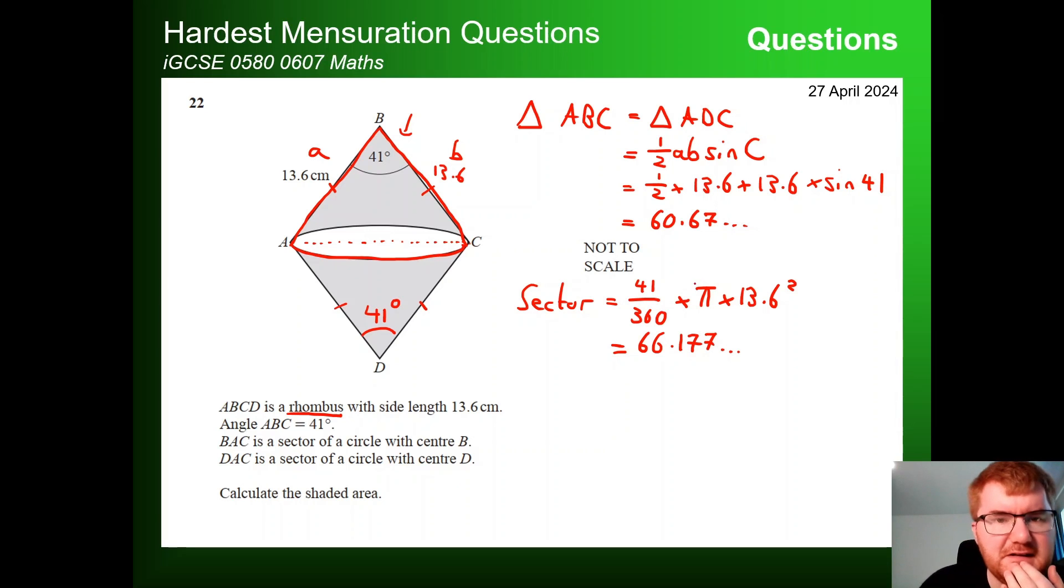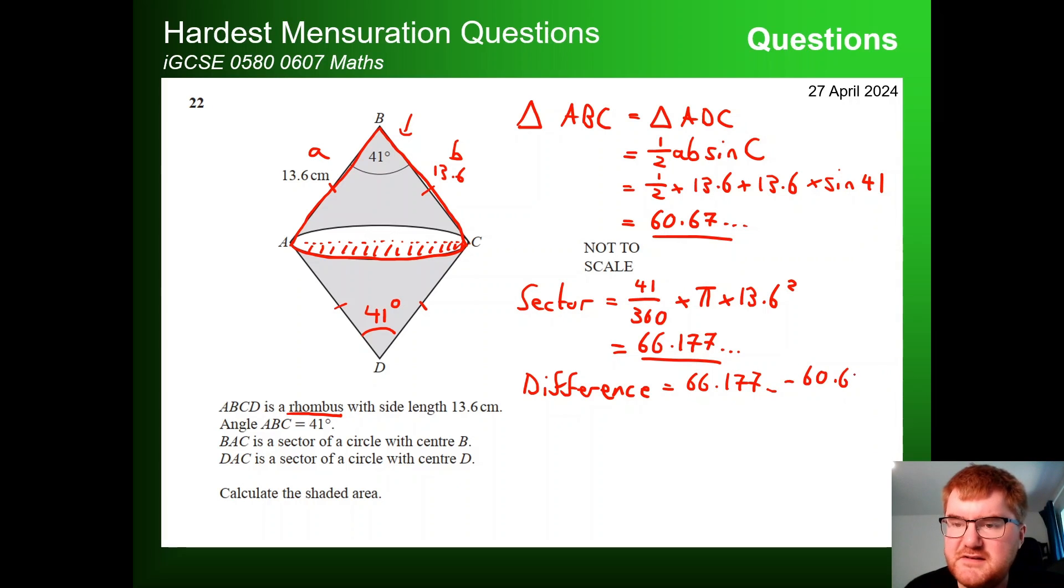Then we have a little bit of a think about this and go, well, if we found the difference between these results, so difference between 60.67 and 66.177, the difference between that, so our triangle and the sector, well, the difference between that is going to be equal to this area here. So if I find the difference between these two things, so I'm just taking our 66.177 and then minusing the 60.67 dot dot dot, I find the shaded area that I've just indicated. So if I do that on my calculator, so 0.5 times 13.6 times 13.6 times the sine of 41, making sure you've got enough brackets in there, I get my answer here of 5.5049.